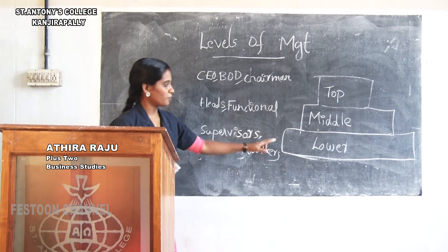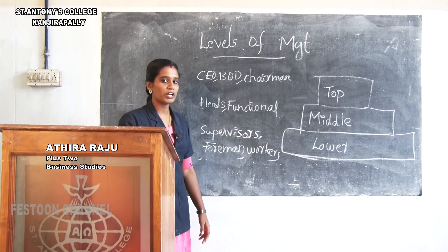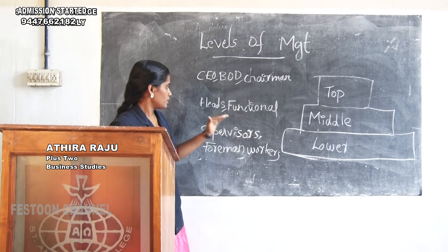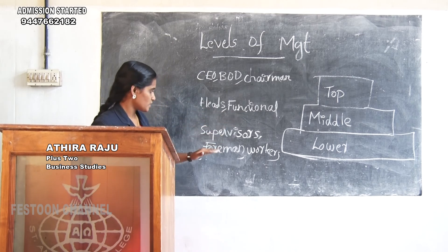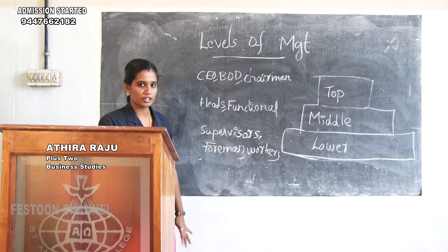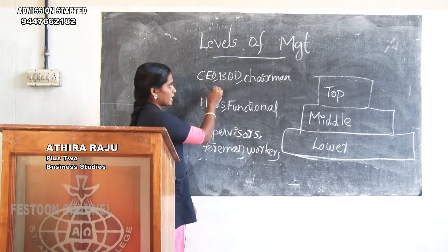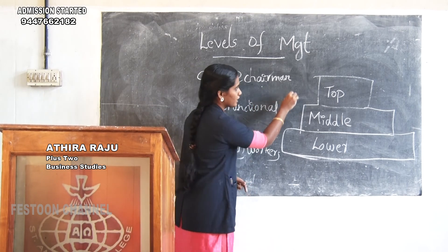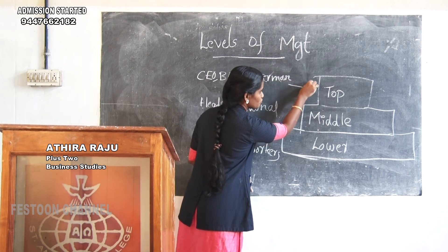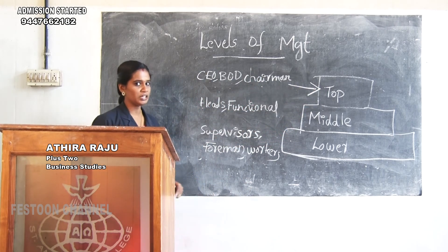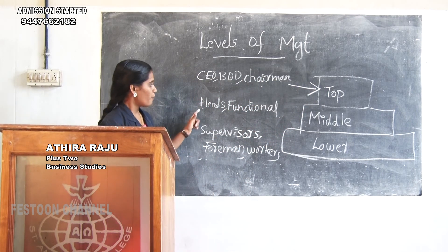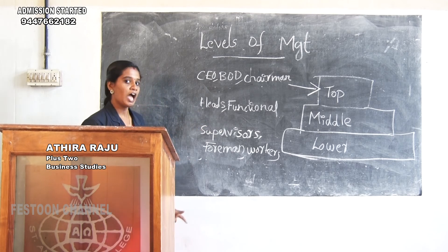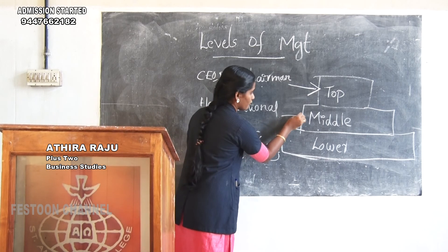Levels of management are classified into three: top level management, middle level management, and lower level management. CEO, Board of Directors, and Chairman are called top level management. Heads of Department and different types of functional managers form middle level management.